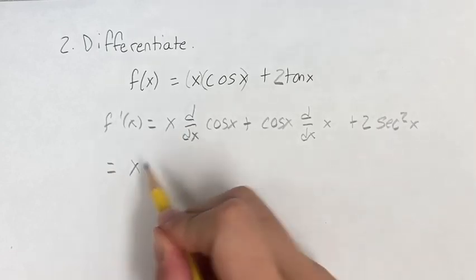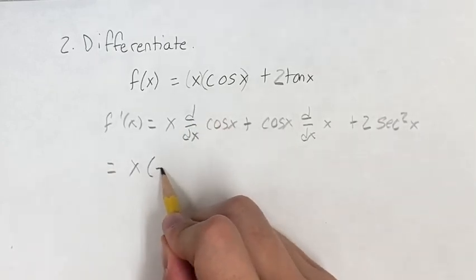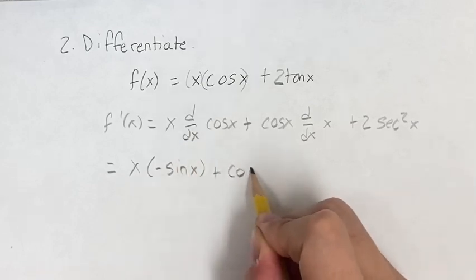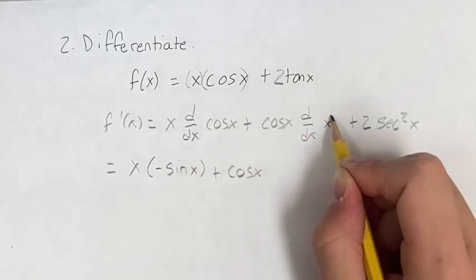So this is going to be x times the derivative of cosine x is negative sine x, plus cosine x. The derivative of x is 1.